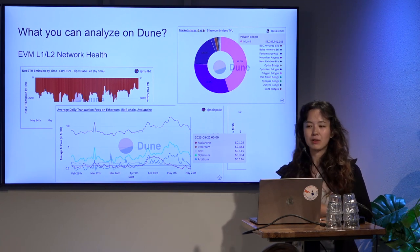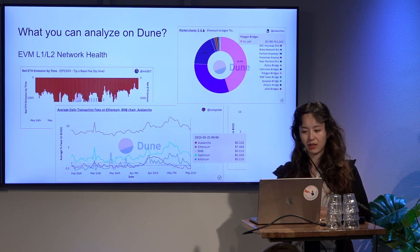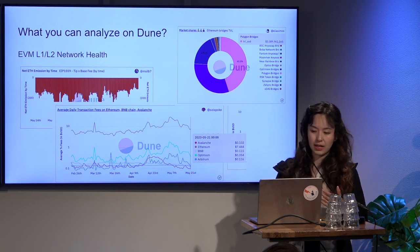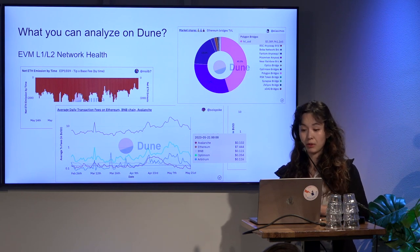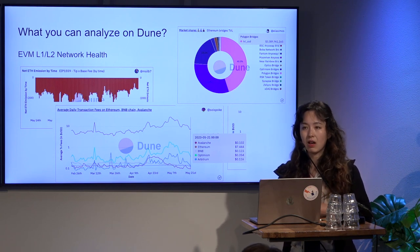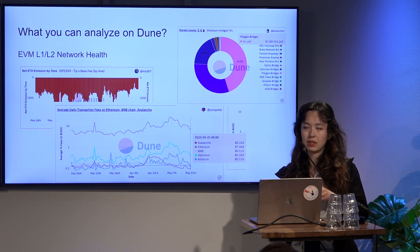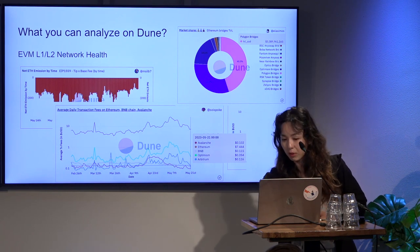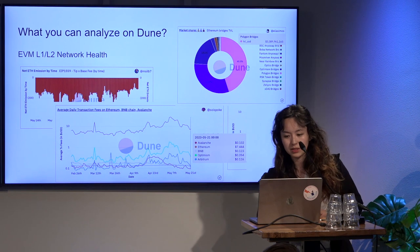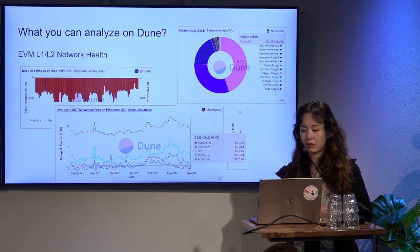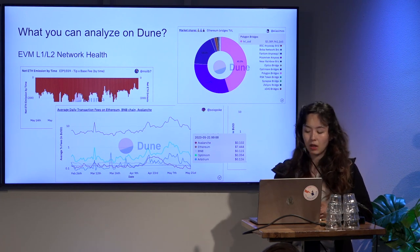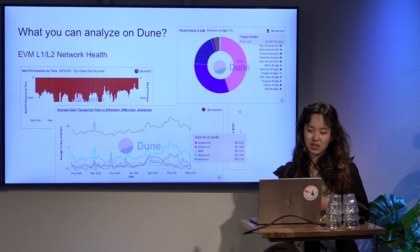Starting maybe two years ago, different L1s and L2s came up — Optimism, Arbitrum, Polygon, BSC — and people started to wonder how much assets are flowing into those layer ones or layer twos. One way to look at it is the Ethereum bridging TVL. There are bridge protocols where you stake assets in Ethereum and withdraw from another chain. One dashboard from Elias shows the TVL staked into all those bridges across different L2s. Apparently Polygon has the most assets right now, then Arbitrum and Optimism.